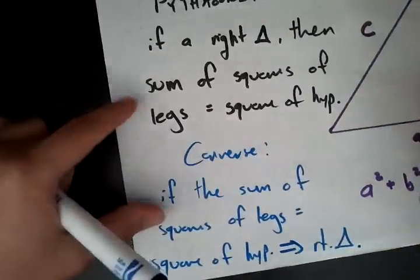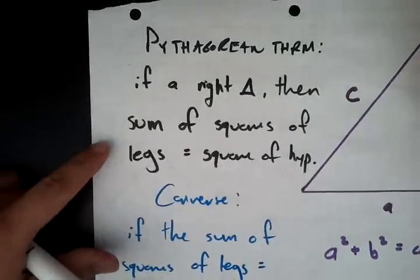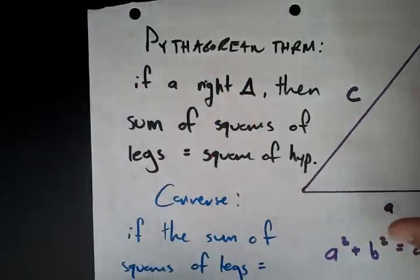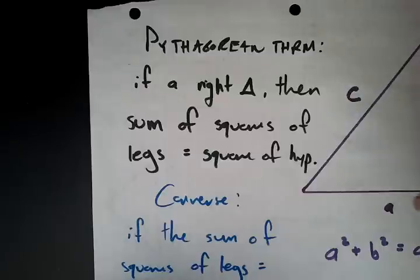Therefore, this is a biconditional statement. That means, if and only if it's a right triangle, then the sum of the squares of the legs will be equal to the square of the hypotenuse.